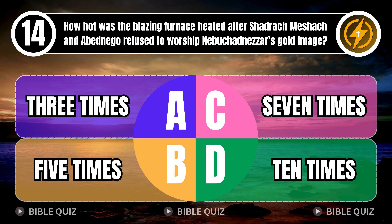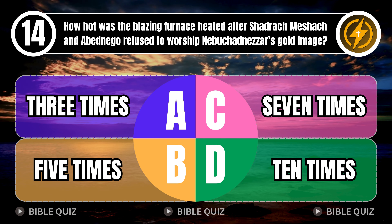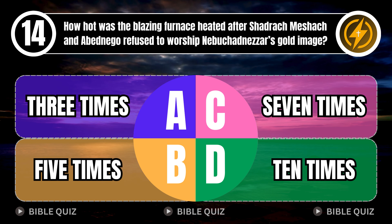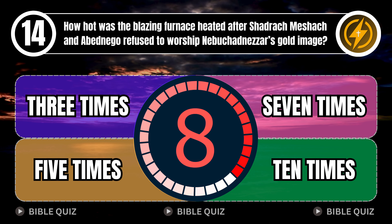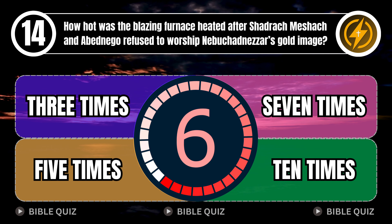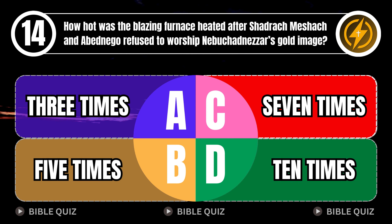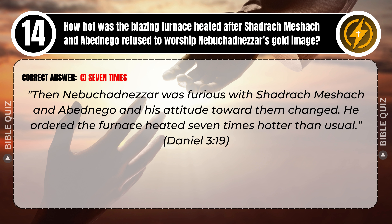Question 14: How hot was the blazing furnace heated after Shadrach, Meshach and Abednego refused to worship Nebuchadnezzar's gold image? A. Three times. B. Five times. C. Seven times. D. Ten times. Correct answer: C. Seven times. Nebuchadnezzar was furious and his attitude toward them changed. He ordered the furnace heated seven times hotter than usual. Daniel 3 verse 19.